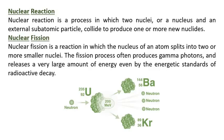Nuclear Reaction: A nuclear reaction is a process in which two nuclei, or a nucleus and an external subatomic particle, collide to produce one or more new nuclides. Nuclear Fission: Nuclear fission is a reaction in which the nucleus of an atom splits into two or more smaller nuclei. The fission process often produces gamma photons.